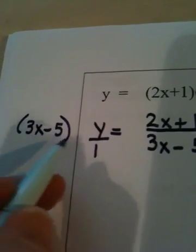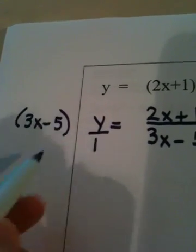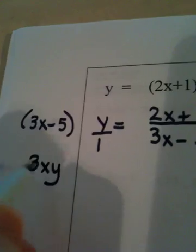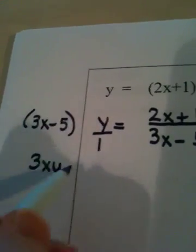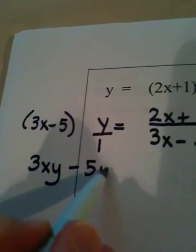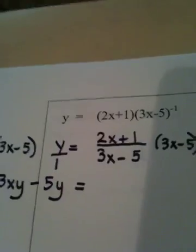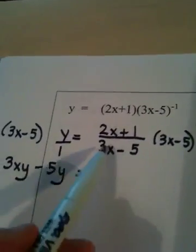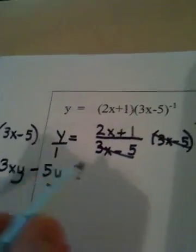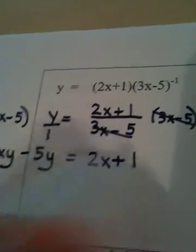3x times y is 3xy, negative 5 times y is minus 5y. And on this side these cancel, leaving me with 2x plus 1.